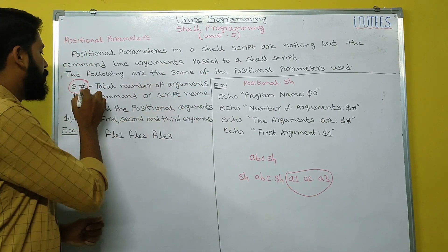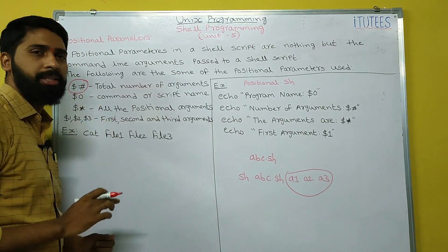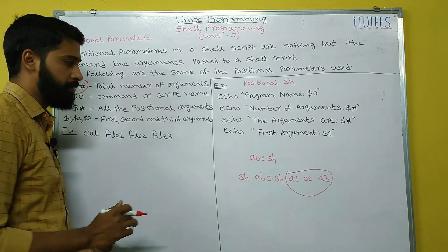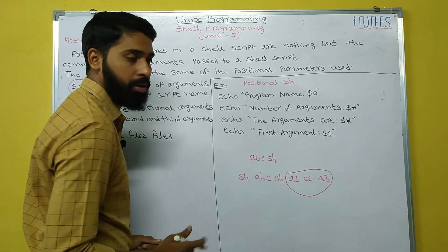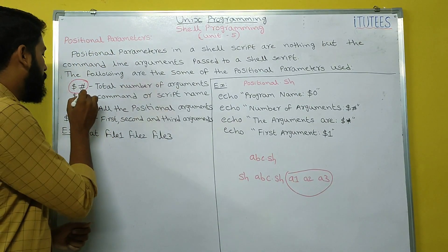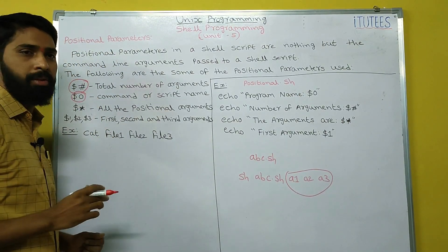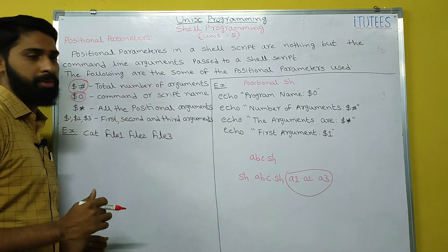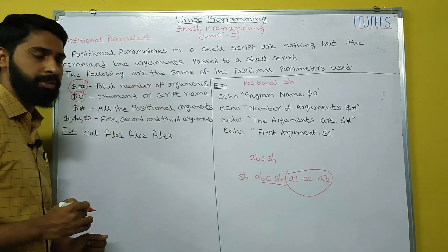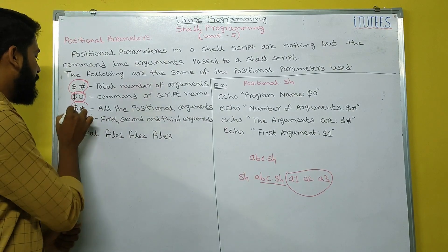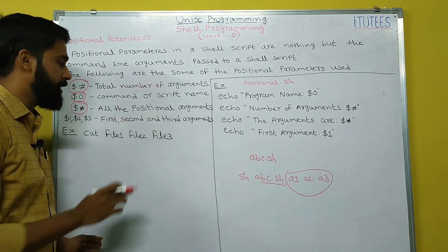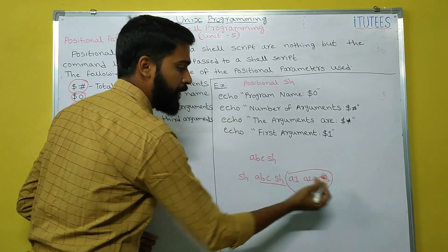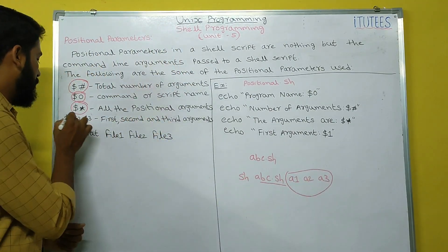One is dollar hash. The dollar hash is used to know the total number of arguments. For example, in this case, how many arguments? Three arguments. Dollar 0 indicates the command name or script name. So what is the script name here? abc.sh. Dollar asterisk indicates all the positional arguments. So all the arguments are a1, a2, a3.